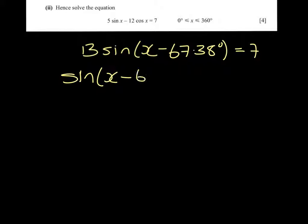We start part 2 by replacing the left side with 13 sin(x - 67.38°) equal to 7. That means sin(x - 67.38°) equals 7/13.